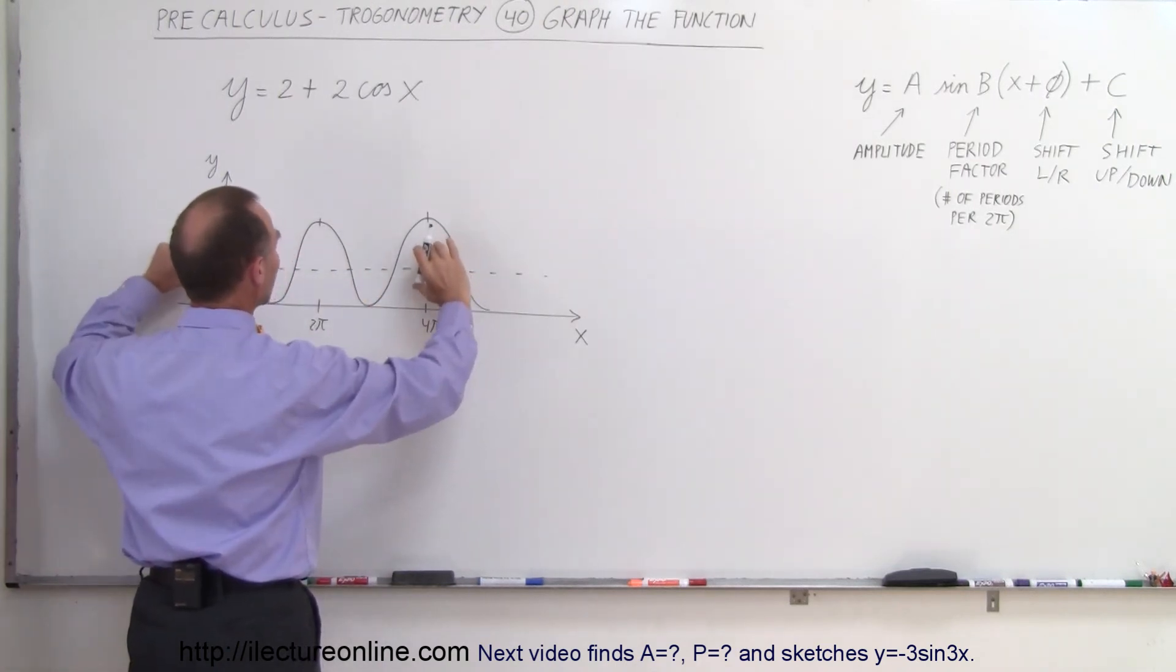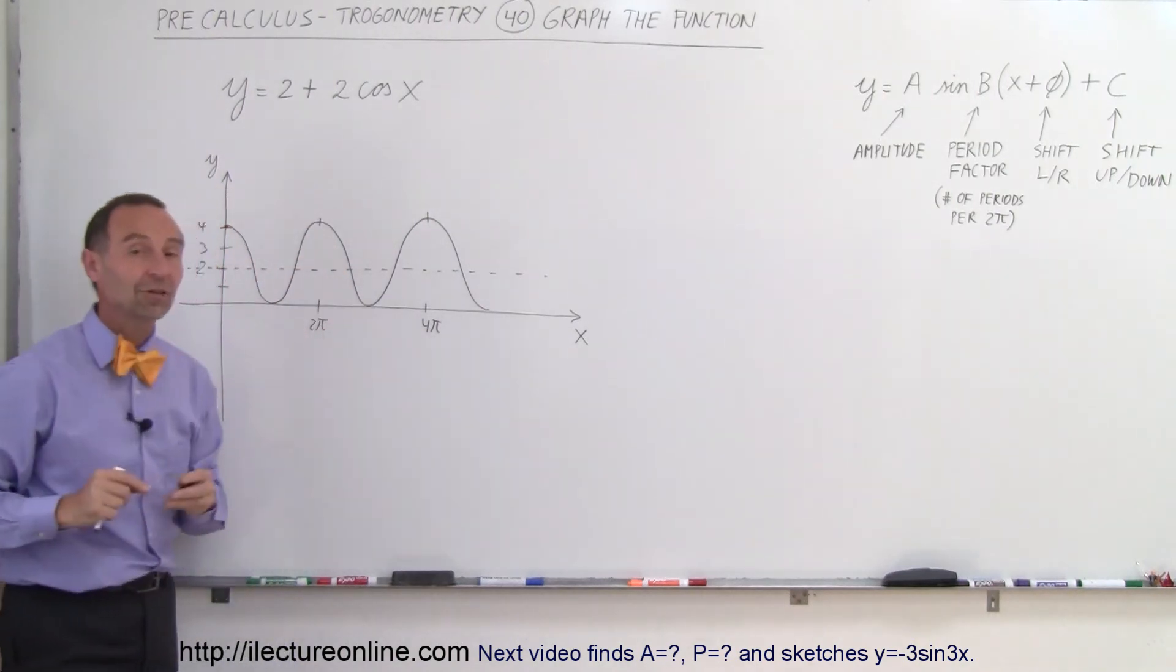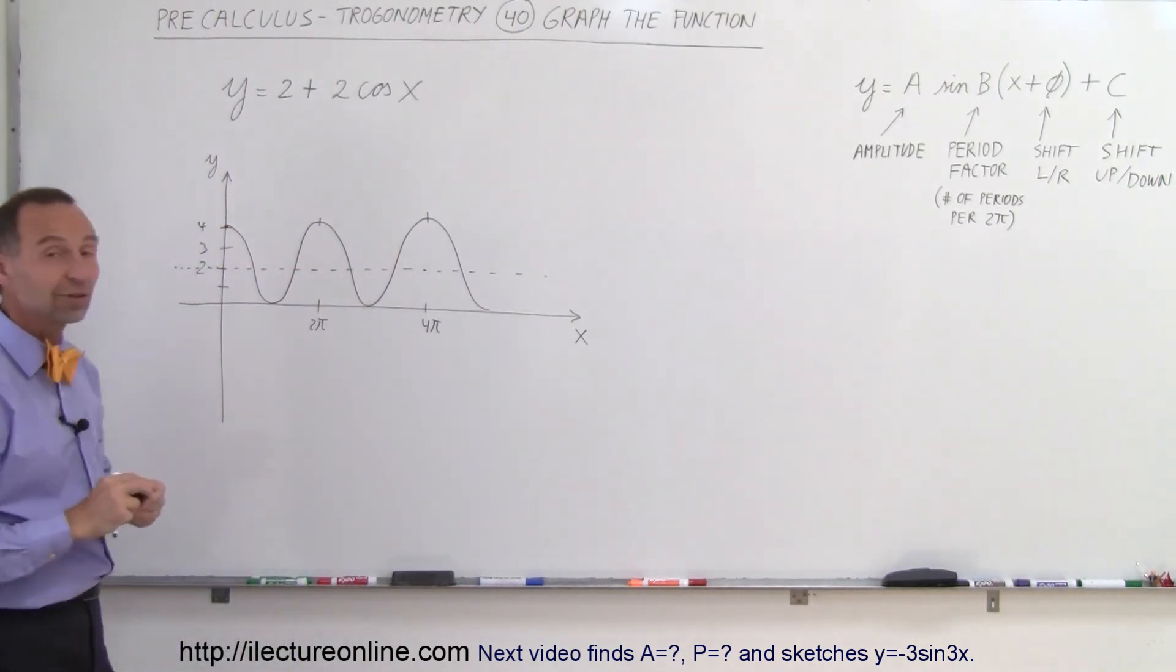So that's what the function looks like. It's raised up 2 units and has an amplitude of 2 in the positive and 2 in the negative side and so that's what the cosine, the 2 plus 2 times the cosine of X looks like.